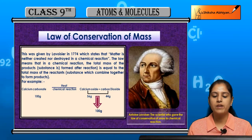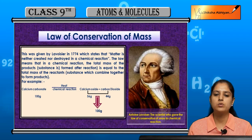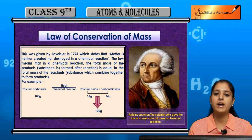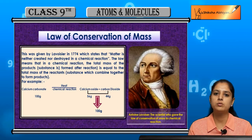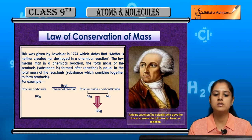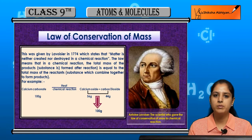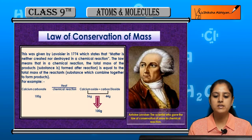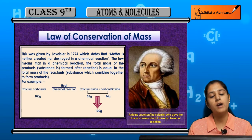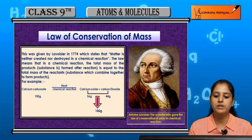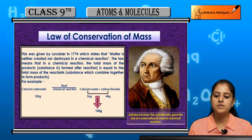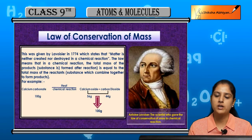Whenever we take some reactants and a chemical reaction occurs, jab products ki formation hoti hai, toh dono ka jo mass hai, woh same rehata hai, woh conserved rehata hai. So the law means that in a chemical reaction, the total mass of the products — that is, the substance formed after the reaction — is equal to the total mass of the reactants, that is, the substances which combine to form the products.